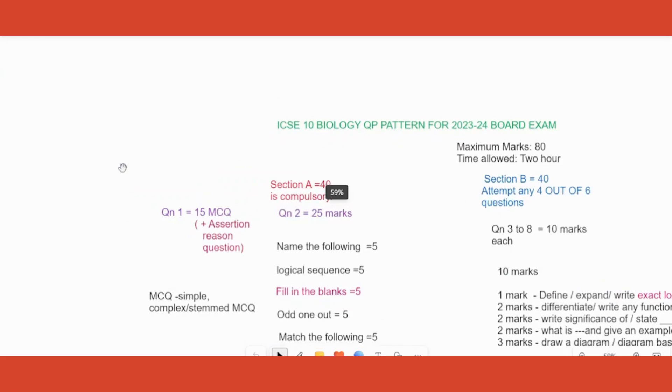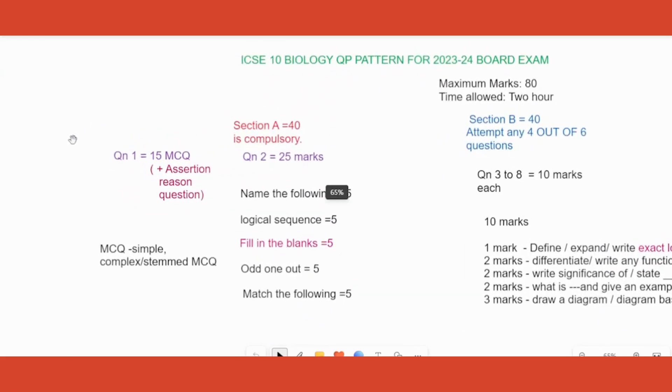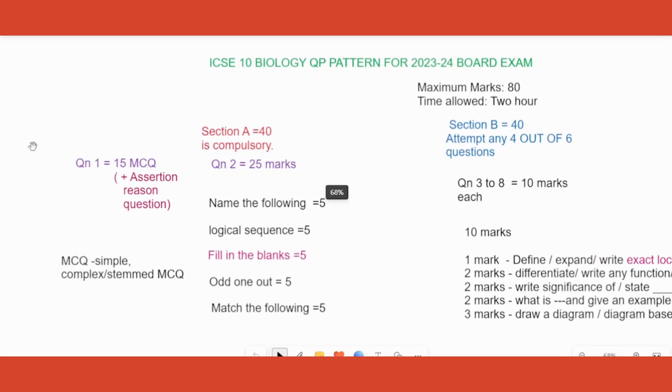It just shows that we are going ahead with competitive based education and competitive based assessments. That is Question 1, 15 mark MCQs which carries most of the simple MCQs, some complex MCQs two or three, and one assertion-reason question.